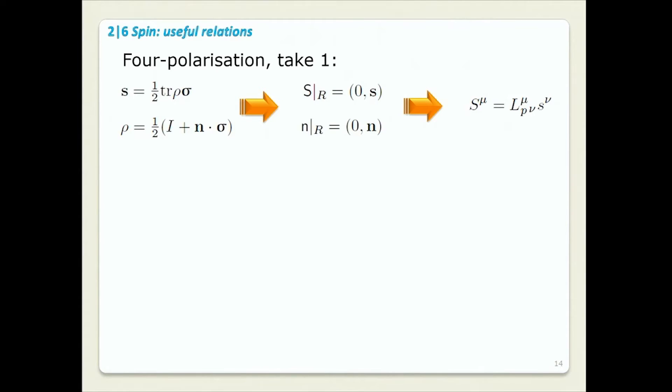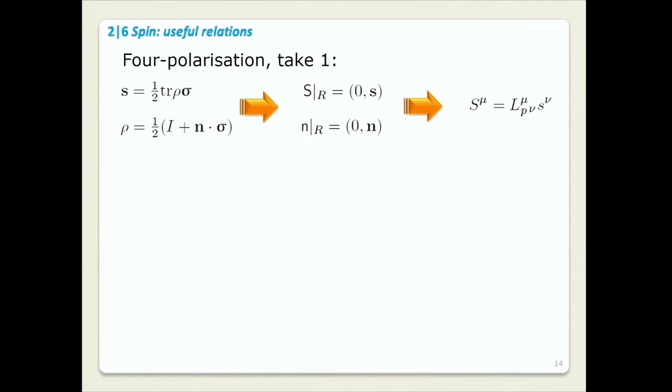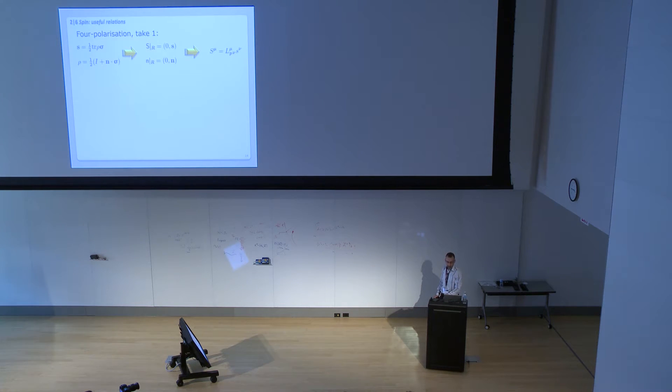Okay, now let's get four objects. So for polarization, take one. We start from non-relativistic expression for spin or for non-relativistic expression for polarization vector. Declare them to be spatial components of a four vector in the rest frame. Perform the standard Lorentz transformation and we get four polarization vector. This vector has a number of useful properties. It's orthogonal to the momentum. Its square is just, okay, in our signature, it's minus square of the rest frame spin. And its time component naturally, easily related to the space components.